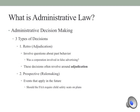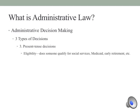Administrators make three kinds of decisions. The first is usually related to adjudication, which resolves a past or previous dispute from a retroactive standpoint — for example, was a corporation involved in false advertising, or was a network show guilty of indecency? The second aspect is prospective — something that will apply in the future, such as whether the FAA should require child safety seats on a particular plane. The final one is eligibility decisions, or present decisions, of whether someone qualifies for food stamps, Medicaid, Medicare, early retirement, or other social services.